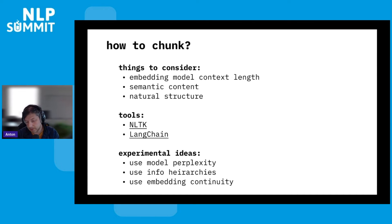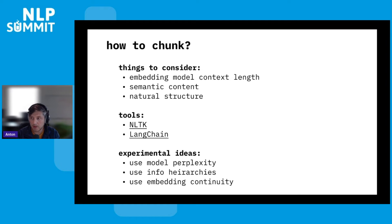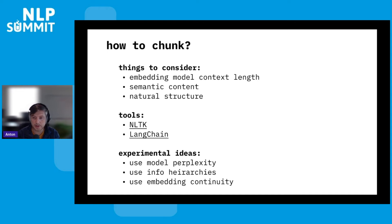The next question is how to chunk. Chunking is important for a couple of reasons. First, embedding models have a limited context window — there are only so many tokens you can feed them. Similarly, large language models only have a certain size context window, although that has been increasing lately. The way you chunk your data determines the semantic content of the retrieved results. If you have very wide chunks, you risk including a lot of irrelevant information with each retrieved result, which is well known to degrade the performance of the overall AI application, as large language models tend to get confused easily by distractors. We can try chunking on natural semantic boundaries, or try to preserve the natural structure of the text.